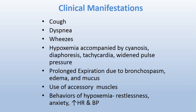For clinical manifestations, the patient presents with cough — one of the commonest symptoms — dyspnea, and wheezes. Hypoxemia can be accompanied by cyanosis, seen as bluishness on the lips or tongue. Other signs include diaphoresis (excessive sweating), tachycardia (increased heart rate), widened pulse pressure, prolonged expiration, use of accessory muscles, and behavior changes from hypoxia such as restlessness, anxiety, and increased heart rate and blood pressure.